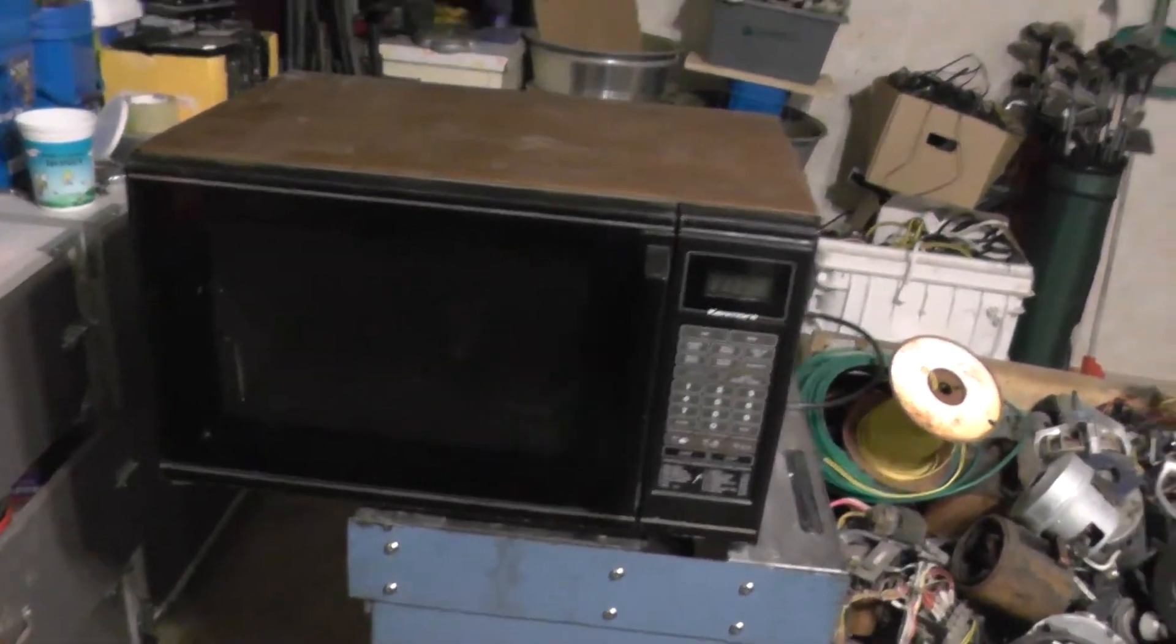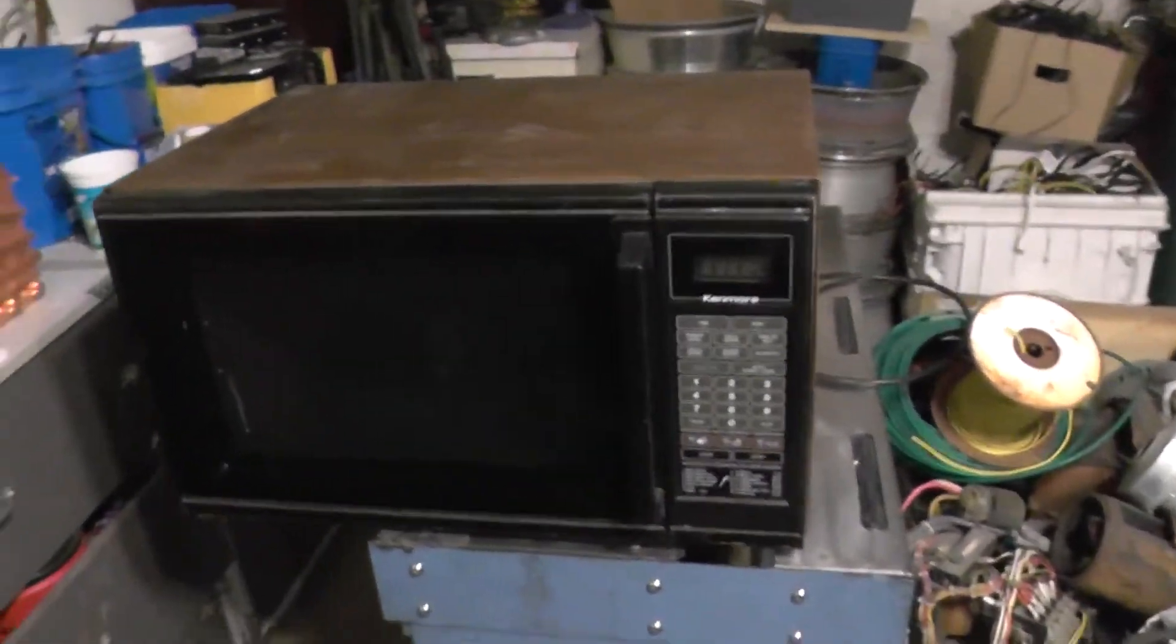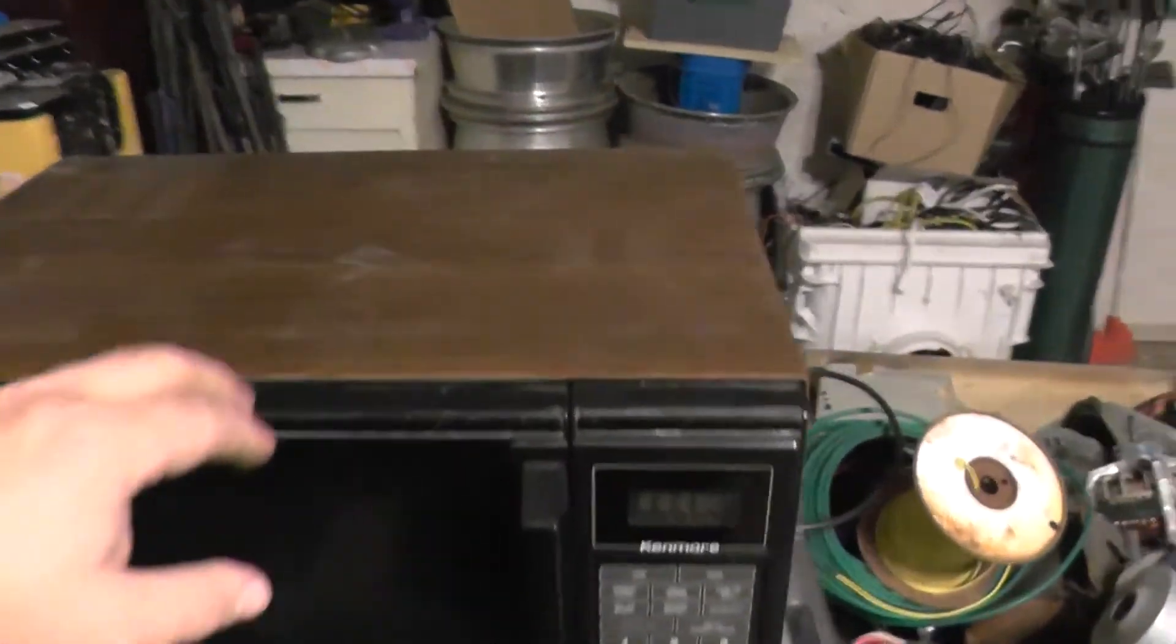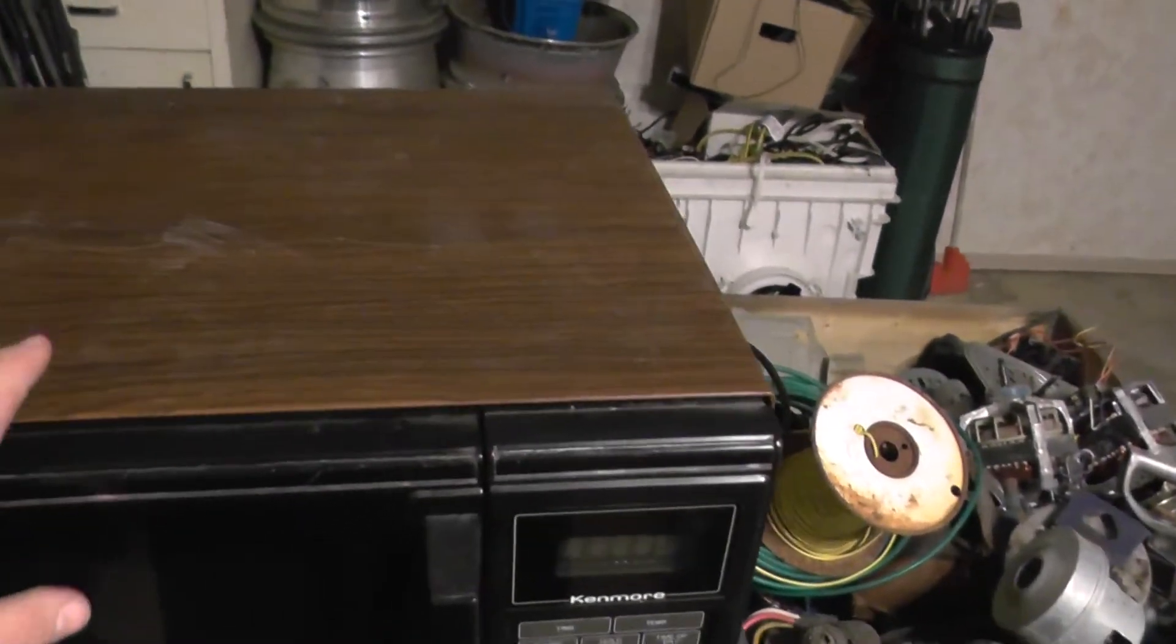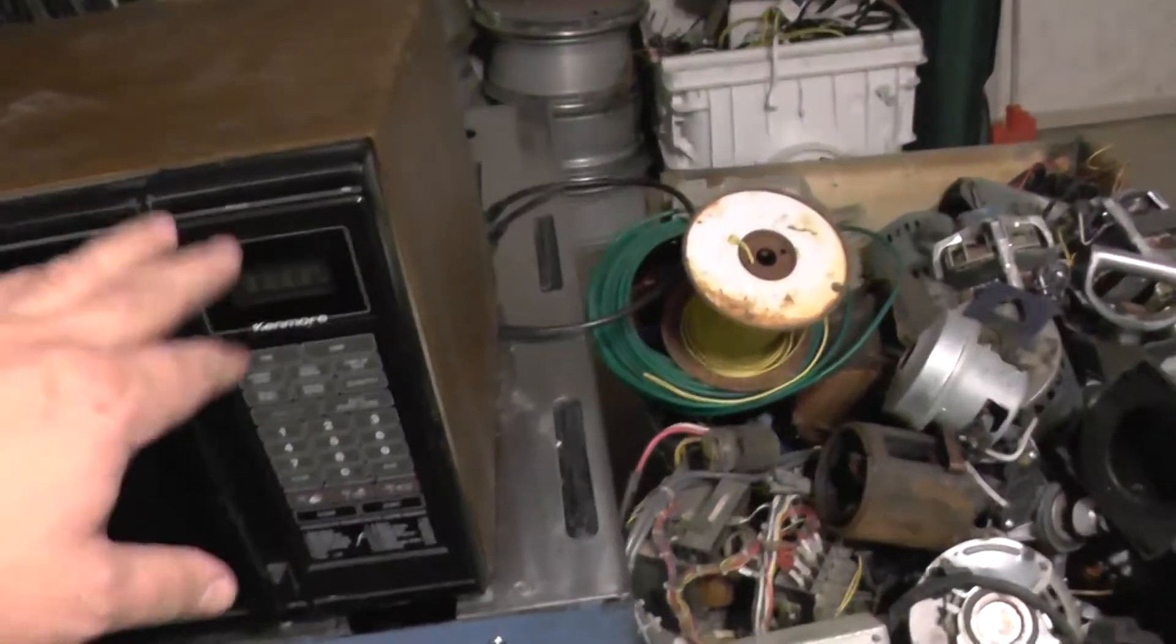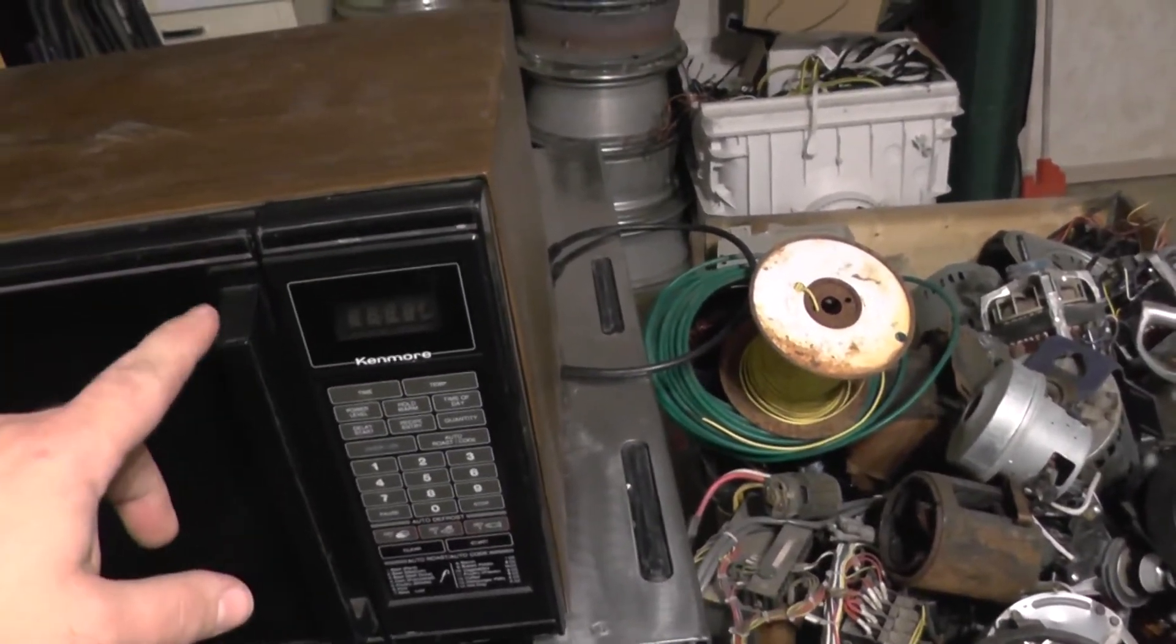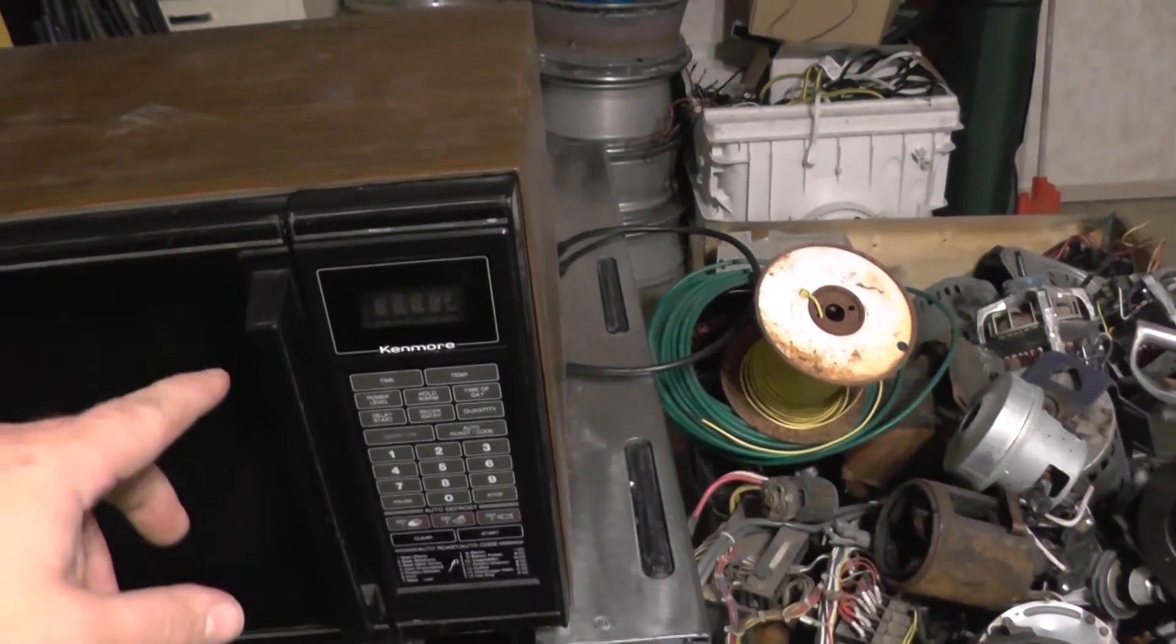So here's the big microwave I got. It's one of the older Kenmore style ones. What I do with these is I usually take the outer shell off, like I do with TVs. Save the screws. I strip out all the stuff on this side. It's usually a transformer, some wiring, motors in there, stuff like that.